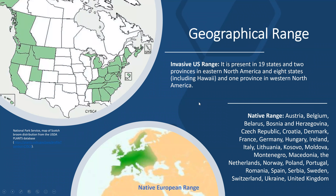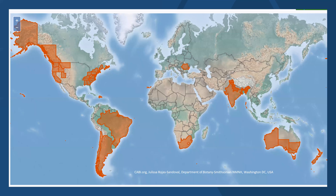The invasive U.S. range covers the United States — some eastern states and also western states — and some areas in British Columbia. Down below is the native range, and I've listed all of the countries it's native to. Worldwide, this is the global invasion range of this weed invasively — this does not include the native ranges, just the invasive range.